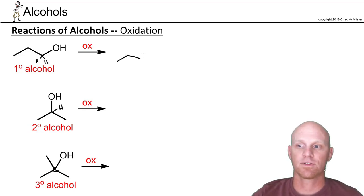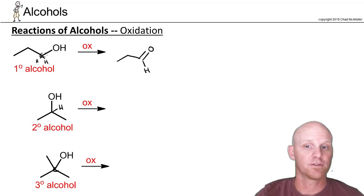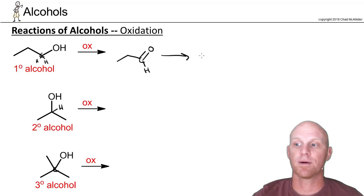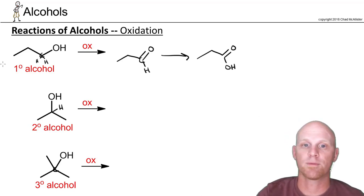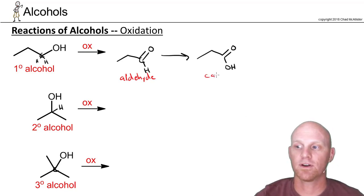In the primary alcohol's case, the first thing that happens is we form a double bond to oxygen. Now we've got two bonds to oxygen and only one bond to hydrogen, whereas we started with two bonds to hydrogens and only one bond to oxygen from this carbon. Because this carbon still has a bond to a hydrogen, we can go one step further. Since oxygen only makes two bonds, we have to add another oxygen into the mix, and we form a carboxylic acid. So after one step of oxidation for that primary alcohol, we form an aldehyde. But if we go through a second step of oxidation, we can turn it into a carboxylic acid.